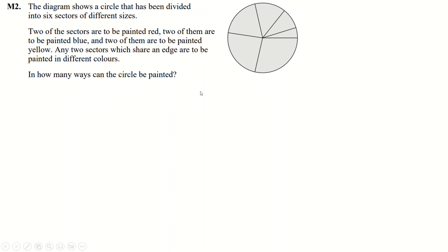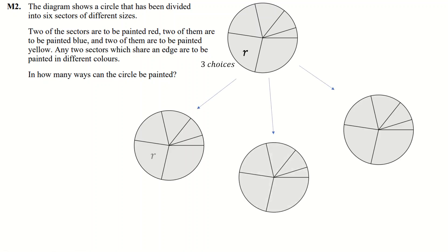Question two — I struggled with this one quite a bit. What I eventually decided to do was pick a sector; it doesn't really matter which one. You've got three choices of how to paint it: red, blue, or yellow. So let's say it's red — there are three choices for that. Then I create three timelines and go through which other sectors can also be red.